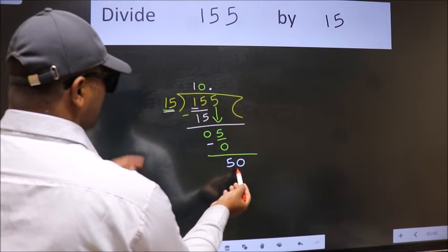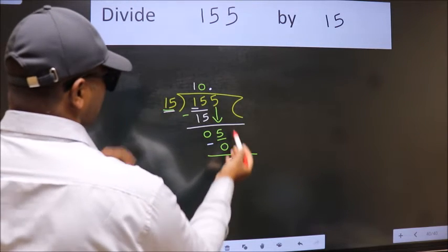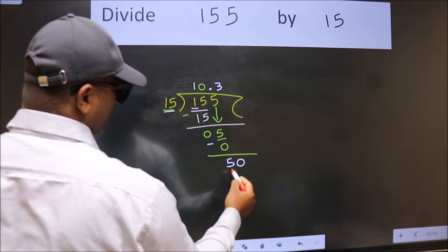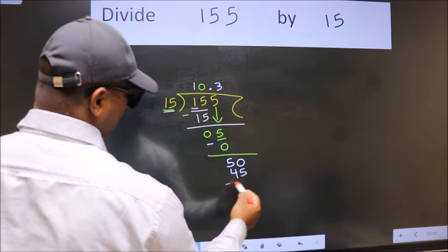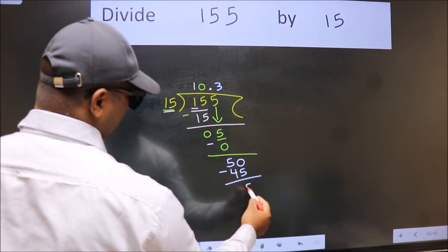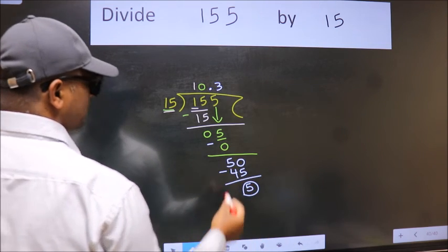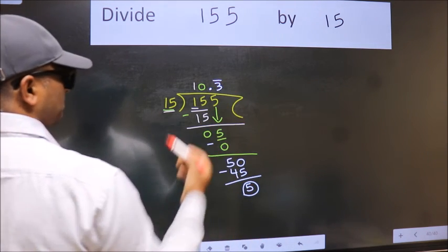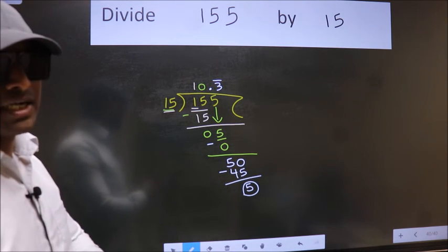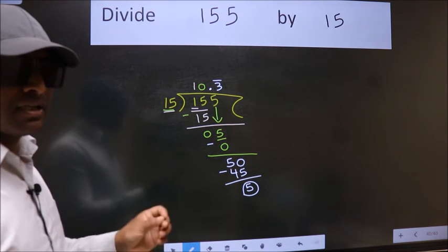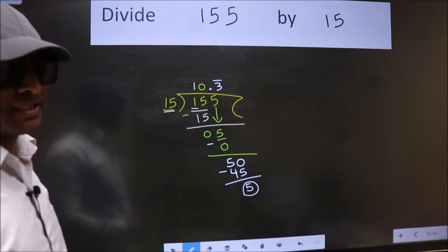A number close to 50 in 15 table is 15 times 3 is 45. Now we subtract. We got 5 again. That means we get bar on this number. Did you understand where the mistake happens? You should not do that mistake.